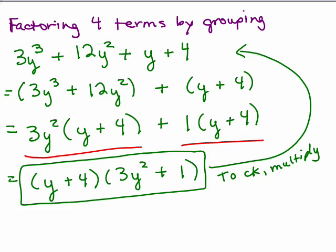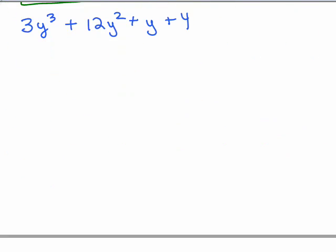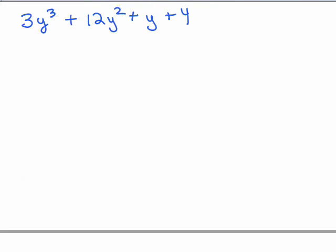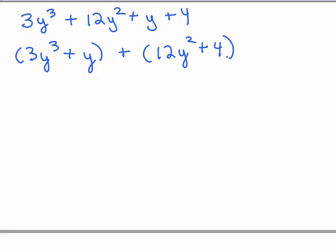Now, I happened to put the first two terms together. That might not have worked, in which case you would try putting maybe the first and third term together, or the first and fourth term together. So what if I redid this problem by putting a different two terms together? Instead of the first two terms, let's put 3y³ and y together (the third term) and 12y² plus 4 together, and see what happens.